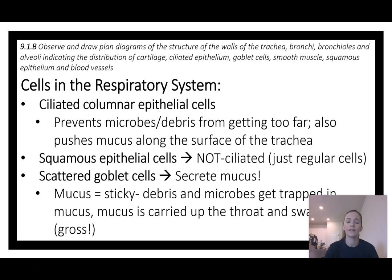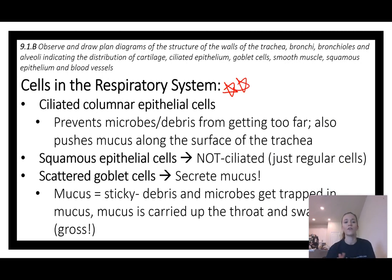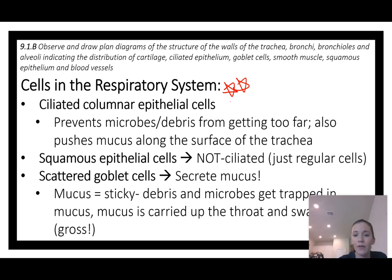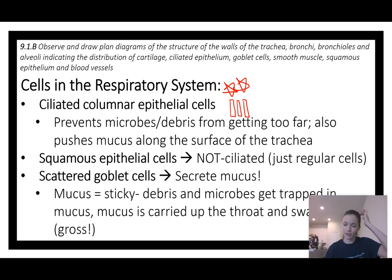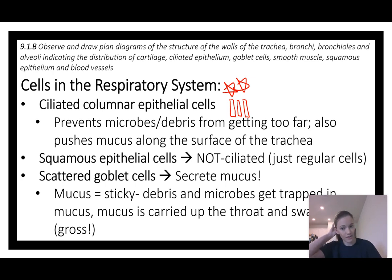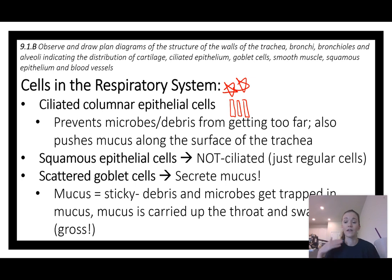Some fancy cell names, and I'll give this two stars for importance. First: ciliated columnar epithelial cells. Ciliated means they have cilia; columnar refers to their long, skinny column shape; and epithelium is just the lining of things. These cells line the airway and stop microbes and debris from getting too far — the hairs in your nose, mucus, and cilia catch a lot of gunk, pushing mucus along the surface until you swallow it.